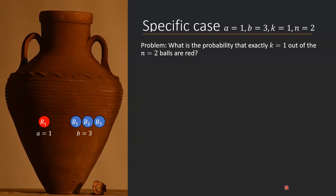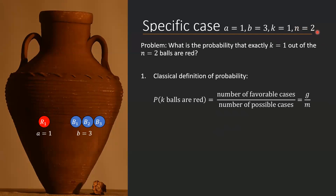Let's move on to a slightly more complicated case where we change n to equal 2. Now we are randomly picking two balls out of the urn and asking ourselves: what is the probability that exactly one out of these two balls is red? Once again we use the classical definition of probability and need to calculate g and m. In this case, it's a little harder to enumerate every possible case, because we get combinations of different balls, and those combinations can outnumber the number of balls themselves.